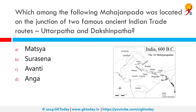Which among the following Mahajanapadas was located at the junction of two famous ancient Indian trade routes, Uttarpath and Dakshinapath? The correct answer is Surasena. The kingdom of Surasena was an ancient Indian region corresponding to the present-day Braj region in Uttar Pradesh, with Mathura as its capital city. According to the Buddhist text Anguttara Nikaya, Surasena was one of the 16 Mahajanapadas in the 6th century BC.